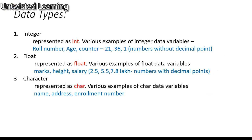Let us quickly revise the data types. You have the integer data type, which represents roll number, age, or some counter. Then float, which represents decimal values such as marks, height, salary, etc. Then you have character data type, represented by char, which includes name, address, enrollment number, and so on.